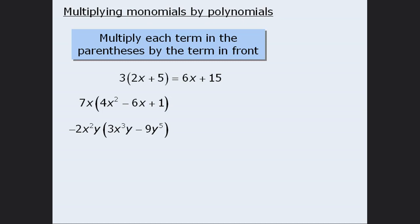This process of multiplying the terms inside parentheses by a term in front is called expanding. In this question, we expanded 3 times 2x plus 5. Now, in the next question, we'll take 7x and first multiply it by 4x squared to get 28x cubed. Then we'll multiply 7x by negative 6x to get negative 42x squared, which we write as minus 42x squared. And finally, when we multiply 7x by positive 1, we get positive 7x, written as plus 7x.